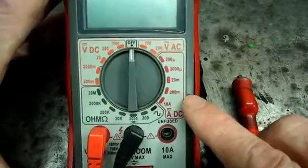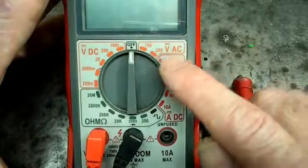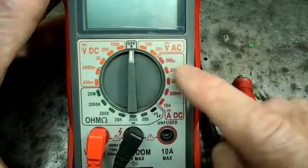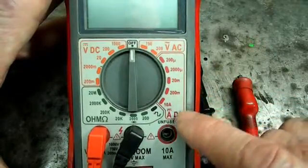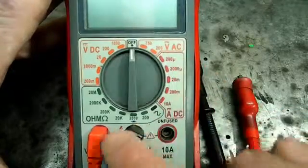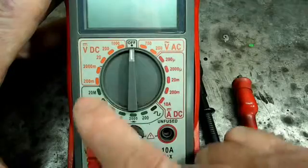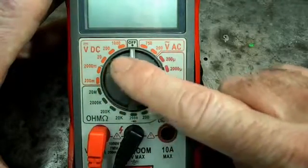Now what we have on our scale here is we have voltage AC right here. We have the 750-200 scale. And right down here we have amperage DC. Over here we have the ohms scale area, and finally our voltage DC.